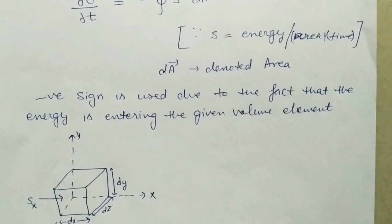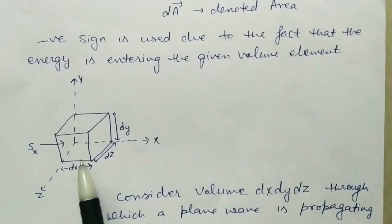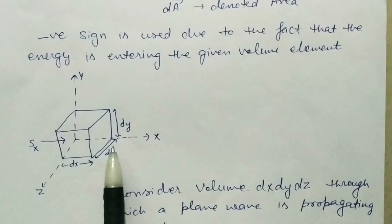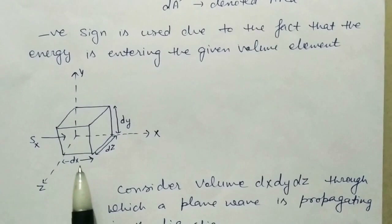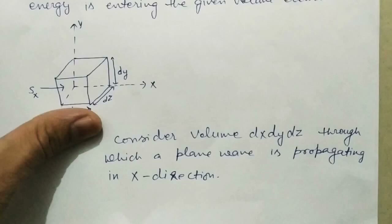Now let us understand the physical meaning properly. We have to assume a cuboidal box with dimensions dx, dy, and dz — this is a volume element whose volume will be dx·dy·dz. We assume that the electromagnetic waves are propagating in the x-direction. In whichever direction the wave propagates, the Poynting vector points in that direction and energy flows in that direction, if the medium is homogeneous.